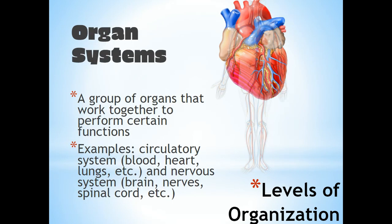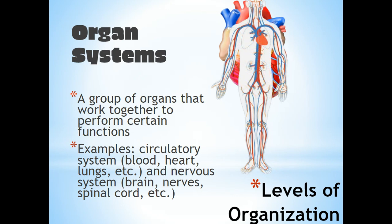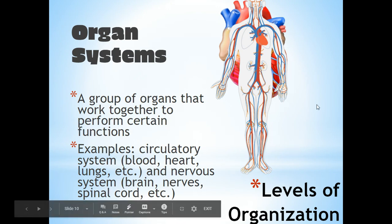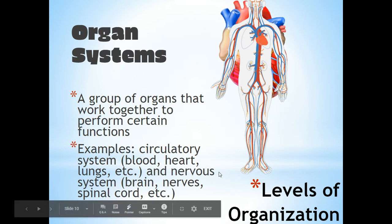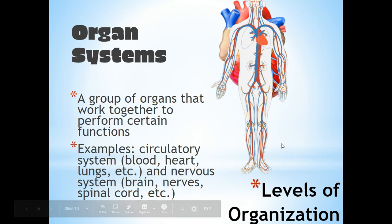Organs make up organ systems. These are a group of organs that work together to perform certain functions. Here's an example of the circulatory system — the heart, blood, and lungs are all part of the cardiovascular system. There's also the nervous system, which includes the brain, nerves, and spinal cord.